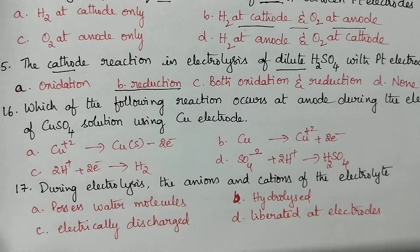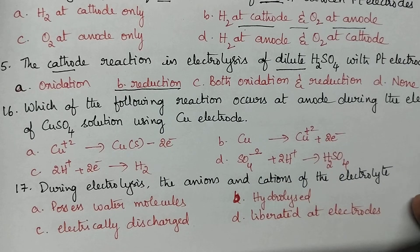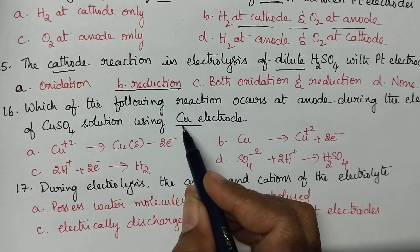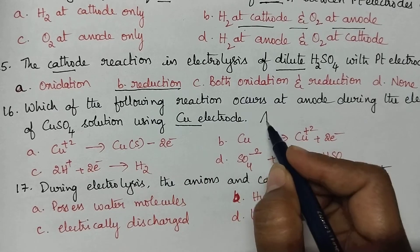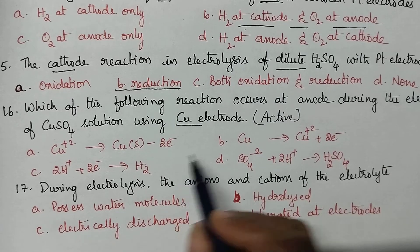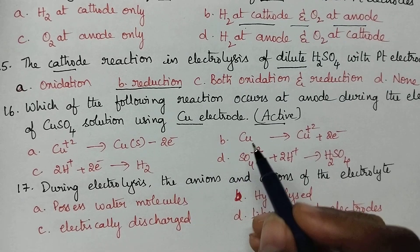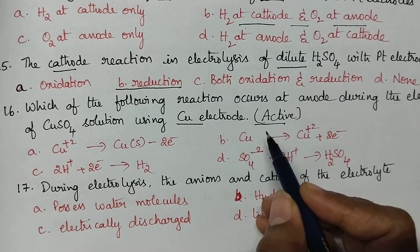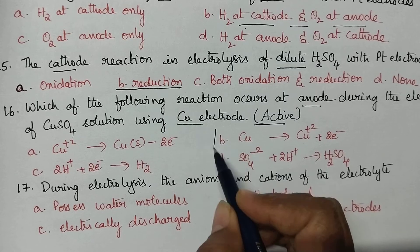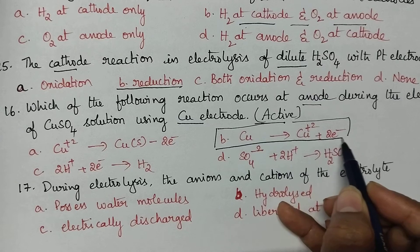Which reaction occurs at the anode during electrolysis of copper sulphate solution using copper electrodes? Copper electrodes are active electrodes. When active electrodes are used, the metal undergoes dissolution at the anode — copper undergoes oxidation, resulting in the formation of Cu²⁺ ions.